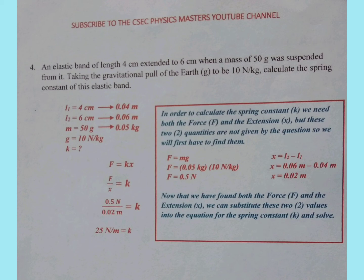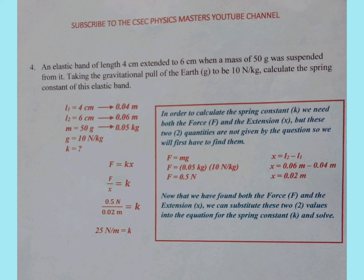We need to write the formula for Hooke's Law: F is equal to KX. Since we are finding K, we need to make it the subject of the equation — for any value that we are finding must always become the subject. K is equal to F over X. Going back to our listed values, we do not have the force and we do not have the extension. So, in order to calculate the spring constant, we need both the force and the extension. These two quantities are not given by the question, so we will first have to find them.